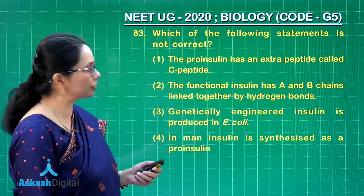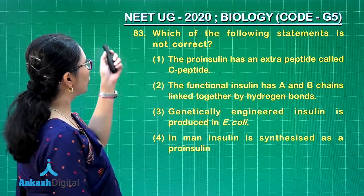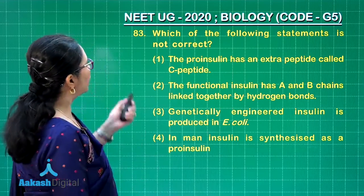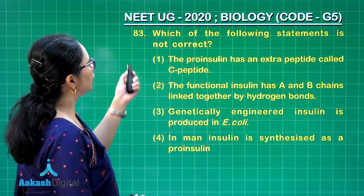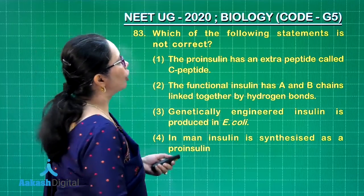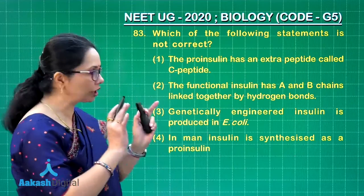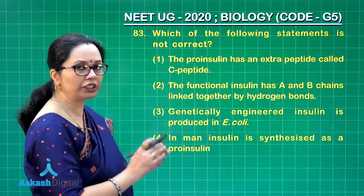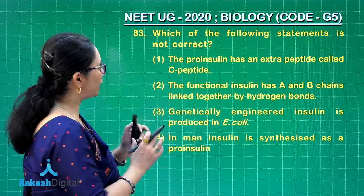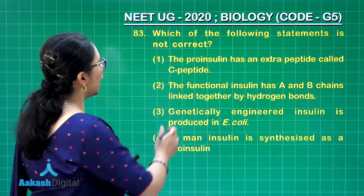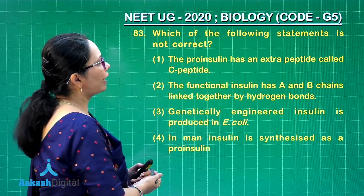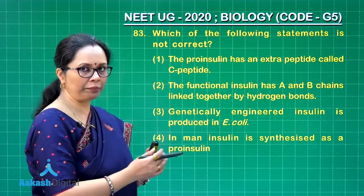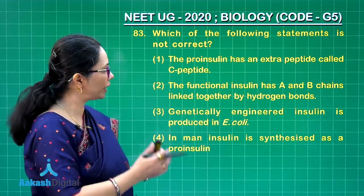Next question we are going to discuss is question number 83. Which of the following statements is not correct — that means we have to choose the statement which is incorrect. The pro-insulin has an extra peptide called the C-peptide. That is right.